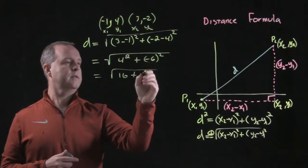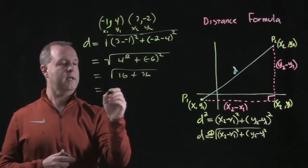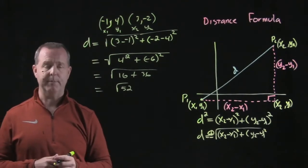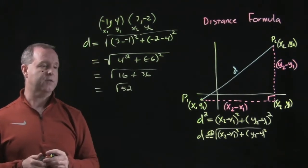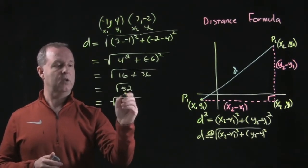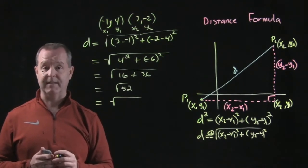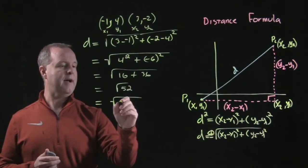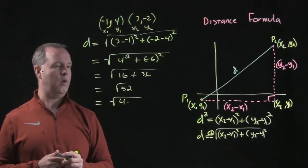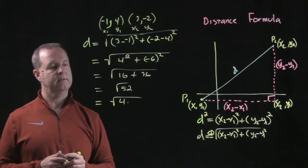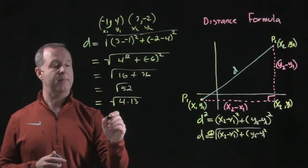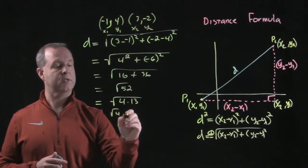16 plus 36 equals the square root of 52. And I believe the square root of 52 we're able to reduce, if we remember how to reduce roots. And one way I like to do that is look for any perfect squares that is a factor of 52, and I believe that 4 is. So that's 4 times what makes 52, 13.